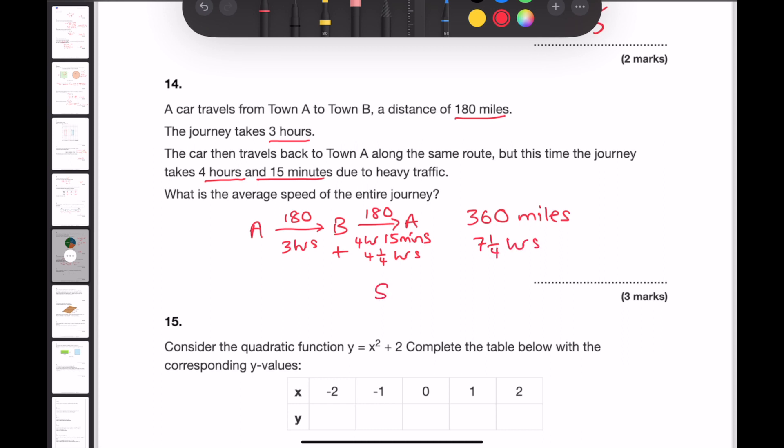In order to calculate the speed, we need to divide the distance 360 by the number of hours. So 7 and 1 quarter. 360 divided by 7 and 1 quarter gives me 49.66 to 2 decimal places. And because we measured distance in miles and time in hours, this will be miles per hour.